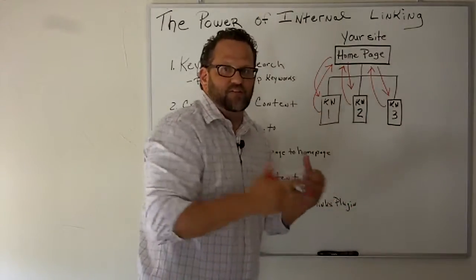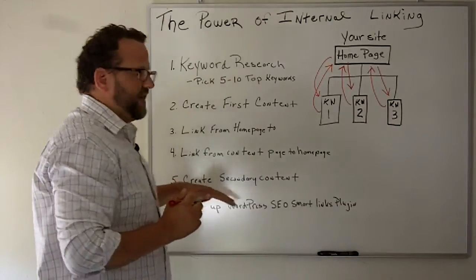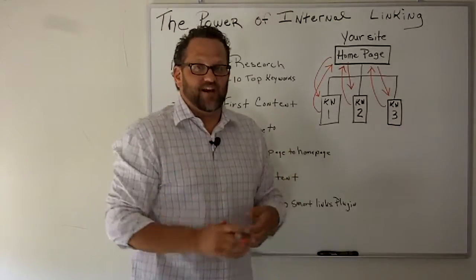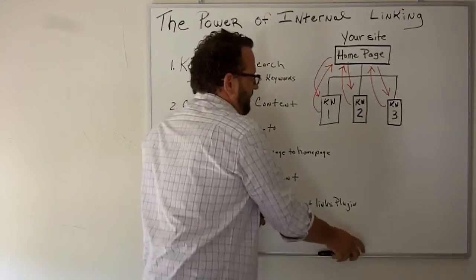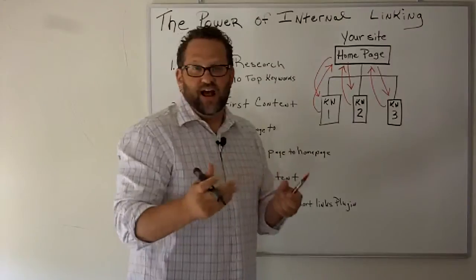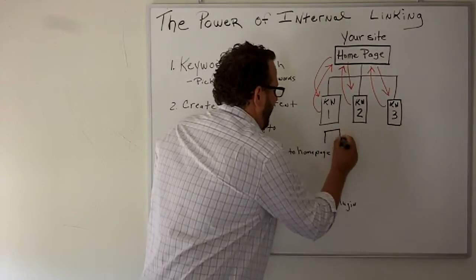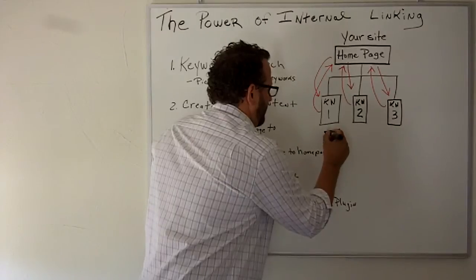So now the fifth step in this process is to create secondary content. So what we're going to do here is let's say we use white tea as our example. The secondary content might be organic white tea. So we'll create another page of content.